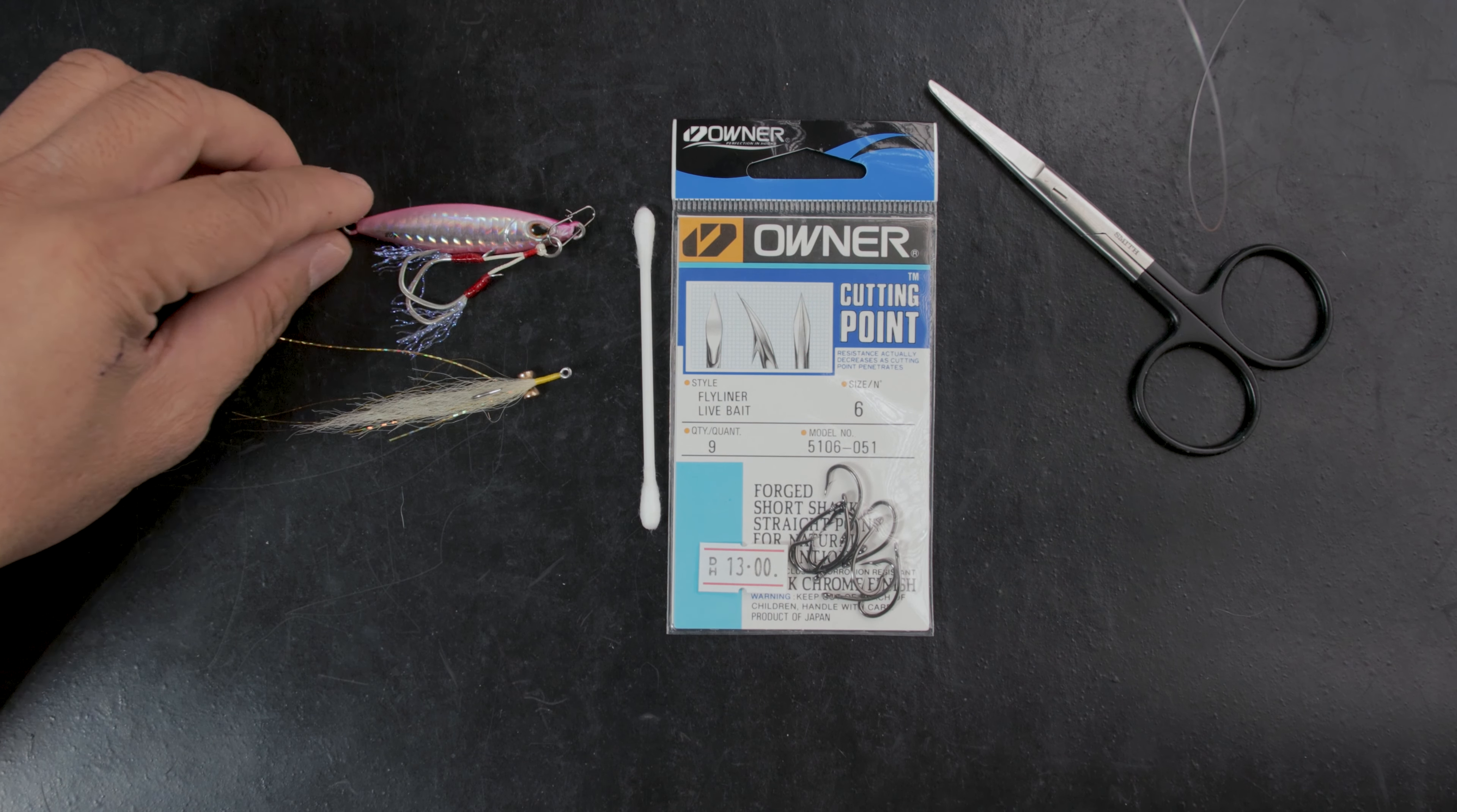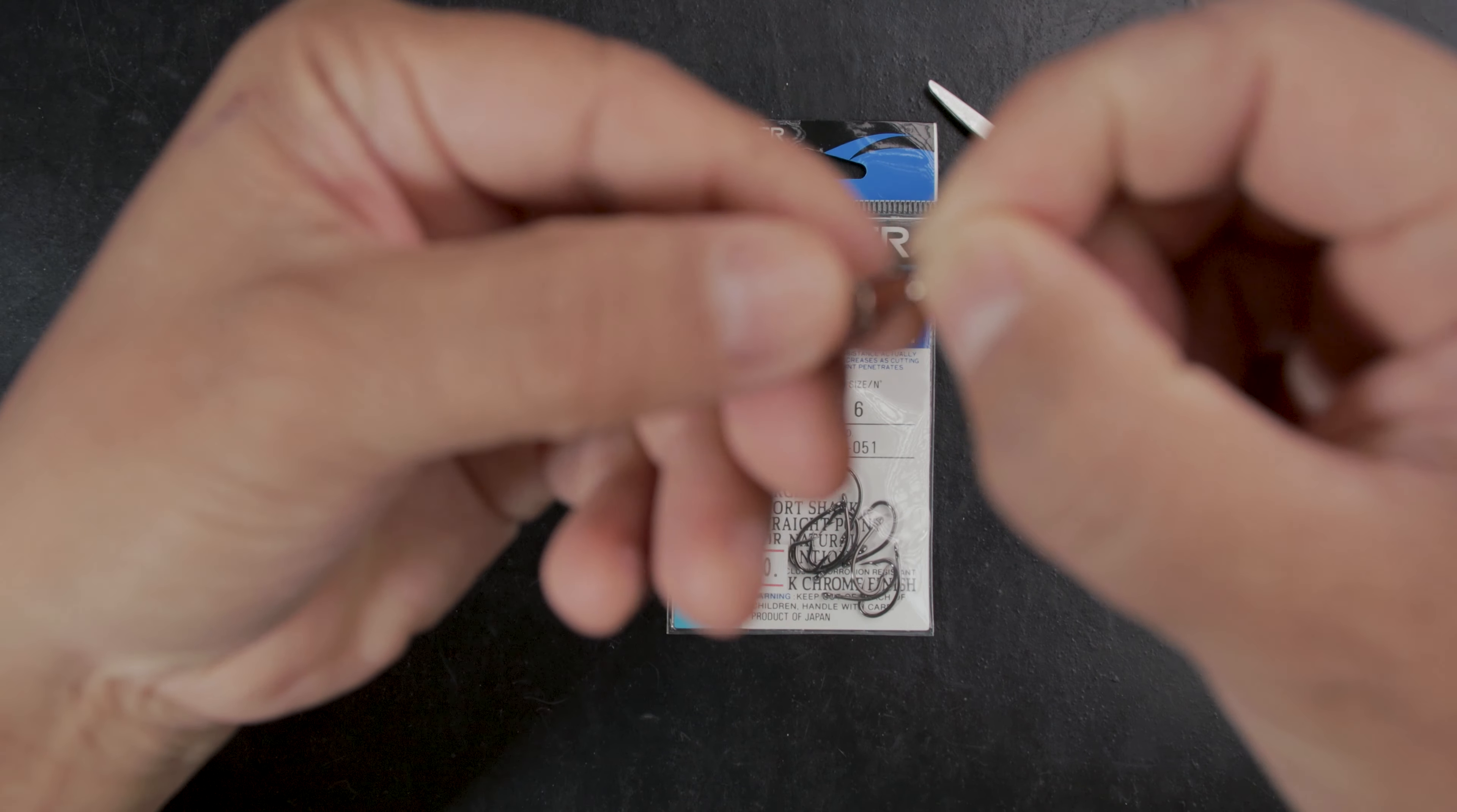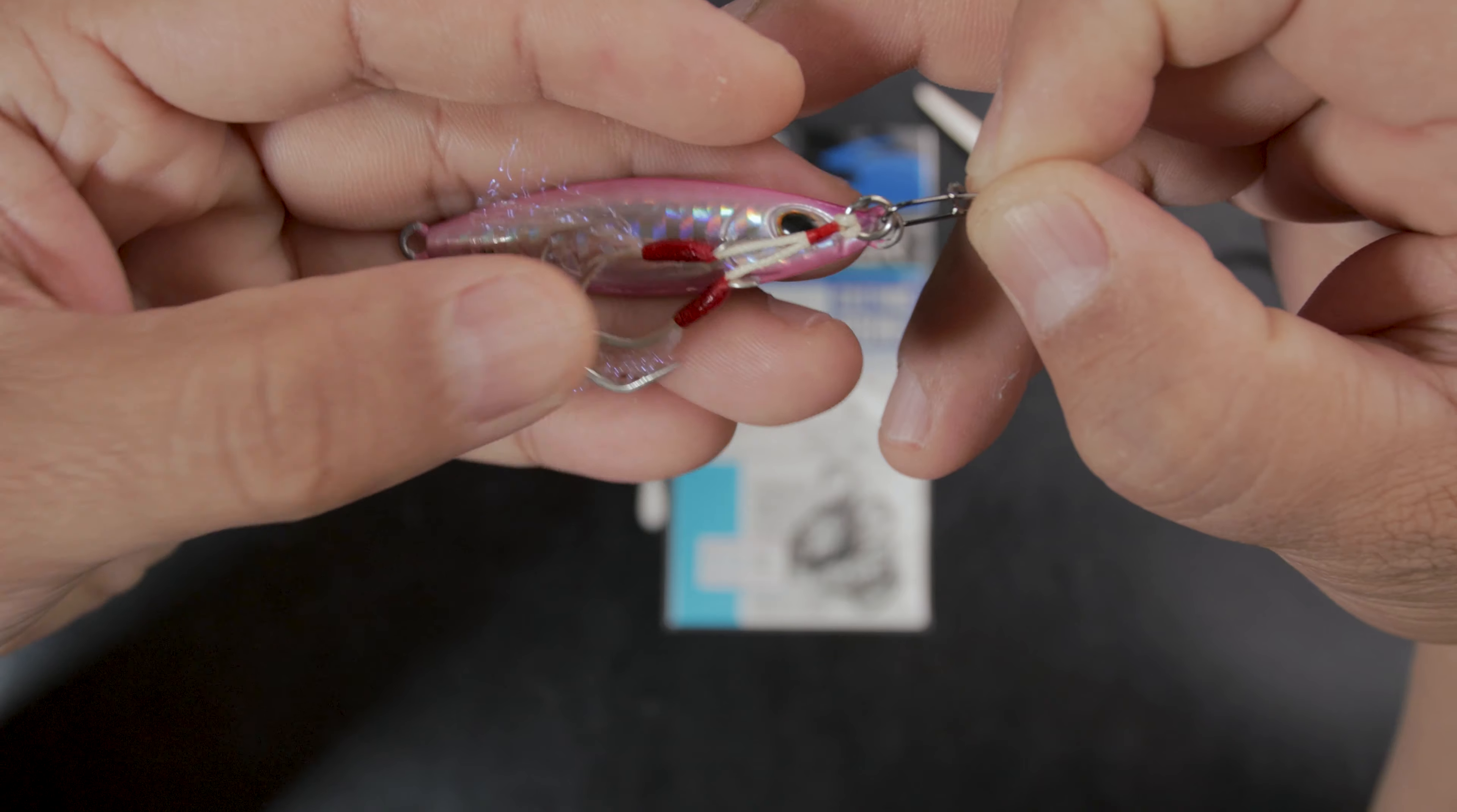For me it would be a 20 gram Coika, it could be a 10 gram Major Craft Jig Para, and this is the whole reason why there's a snap here. The end of the rig terminates into a snap. I don't really like using snaps, but this is one of those instances where I actually like to use a snap so that I can change lures.